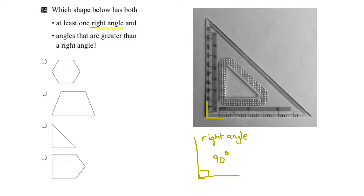Now let's look at the shapes we're given and see if any of them have corners. Going down the list, I can see that this triangle here has a corner, as we've just seen. And this shape at the bottom has a corner — it has two of them, there and there.